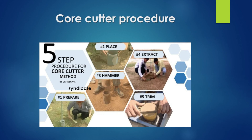For the core cutting method of compaction testing, we take the cylindrical mold and drive it into the soil. We place the cylindrical mold on the side. That is the core cutting approach. We remove the cylindrical mold, trim the ends, and remove the overall weight.